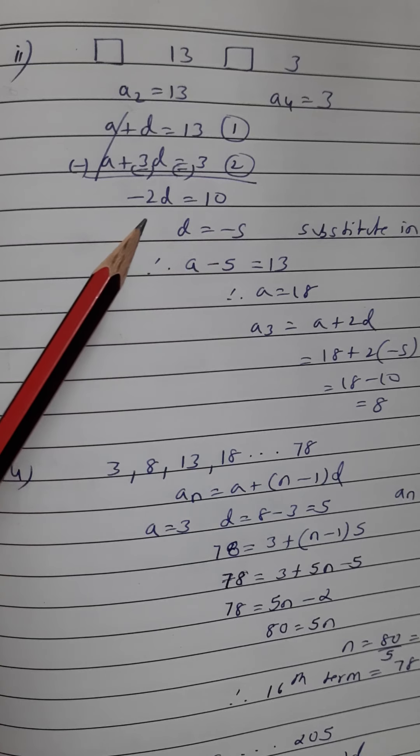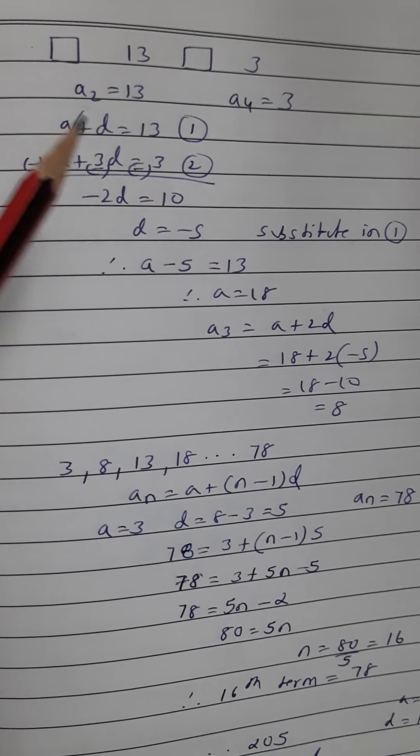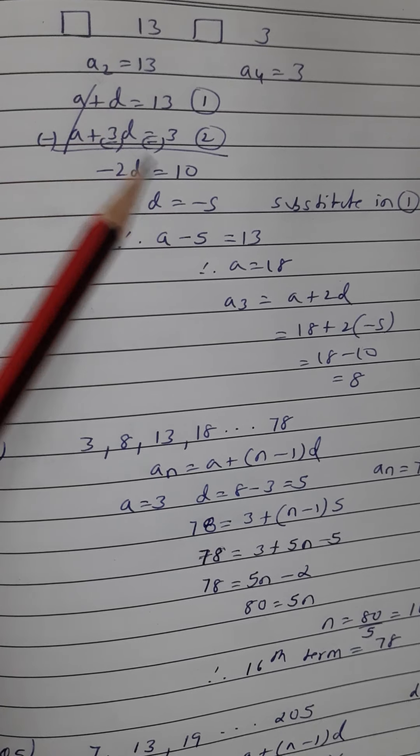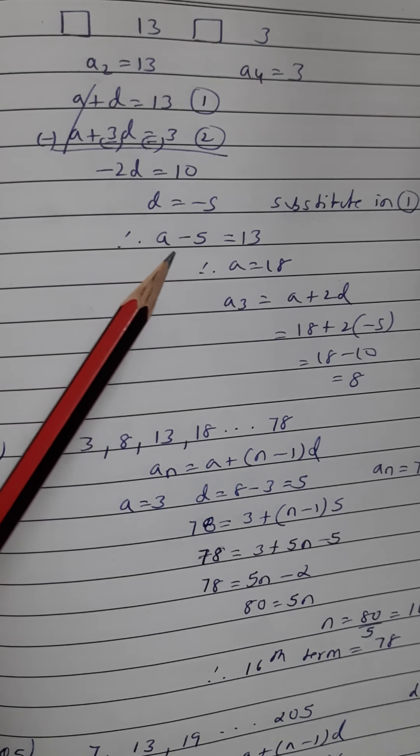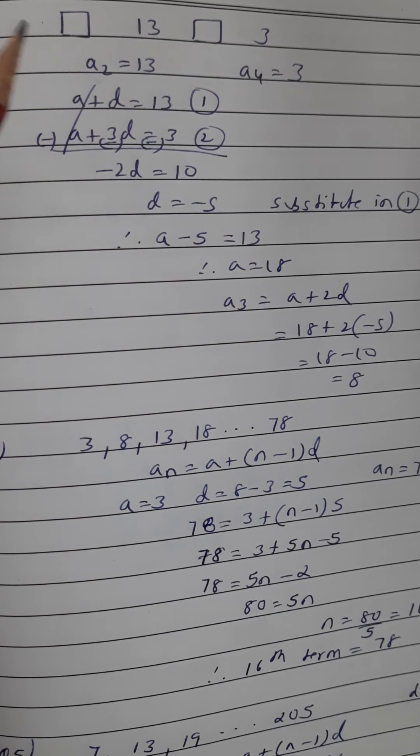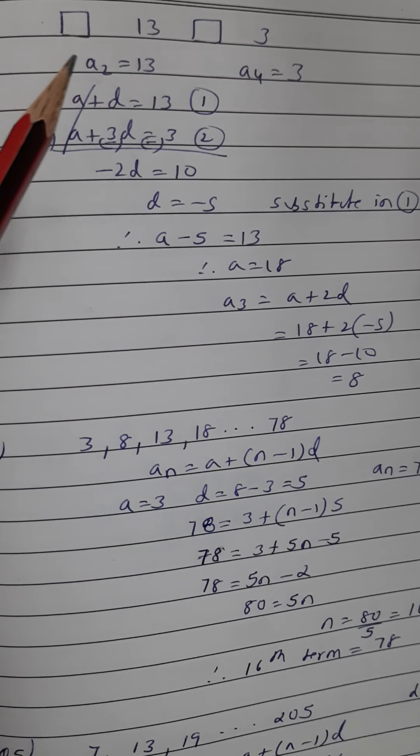This will become minus 2d is equal to 10, so the value of d will be negative 5. Now substitute this value of d is minus 5 in any of the equations. I have substituted in 1, so when I am putting the value of d as minus 5, the value of a will be 13 plus 5, which is 18.